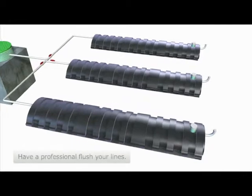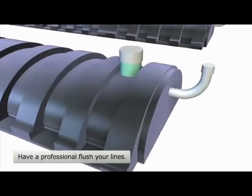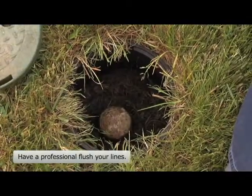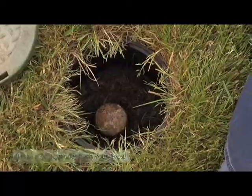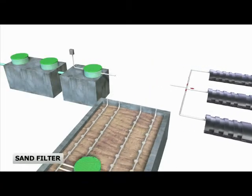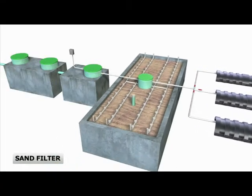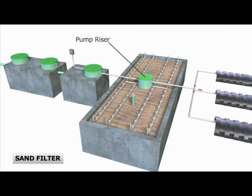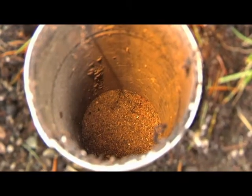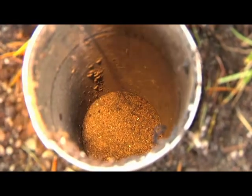These systems usually have cleanouts and observation ports for maintenance. Some systems have a sand filter to pre-treat the effluent before it flows to the drain field — basically a large box of sand and gravel. Sand filters have pumps and visual inspection ports so you can make sure the pump and filter are working properly.